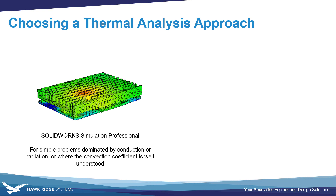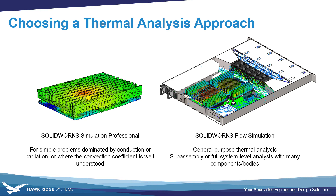Looking back at things, we'd recommend SOLIDWORKS Simulation Professional for simple problems that are dominated by conduction or radiative heat transfer. Remember that in this tool, analyzing things like changing the device orientation or mounting a fan would need to be accomplished exclusively through modification of the convection coefficient. SOLIDWORKS Flow Simulation, on the other hand, incorporates all these effects automatically, and since this behavior is crucial to predicting accurate results for so many thermal problems, it's really our default recommendation for a general purpose thermal analysis tool.